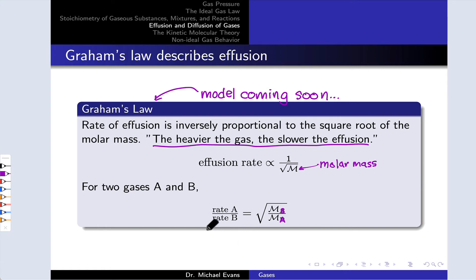So for example, for two gases A and B, the relative rate of effusion of A with respect to B is the square root of the molar mass of B in the numerator divided by A in the denominator.